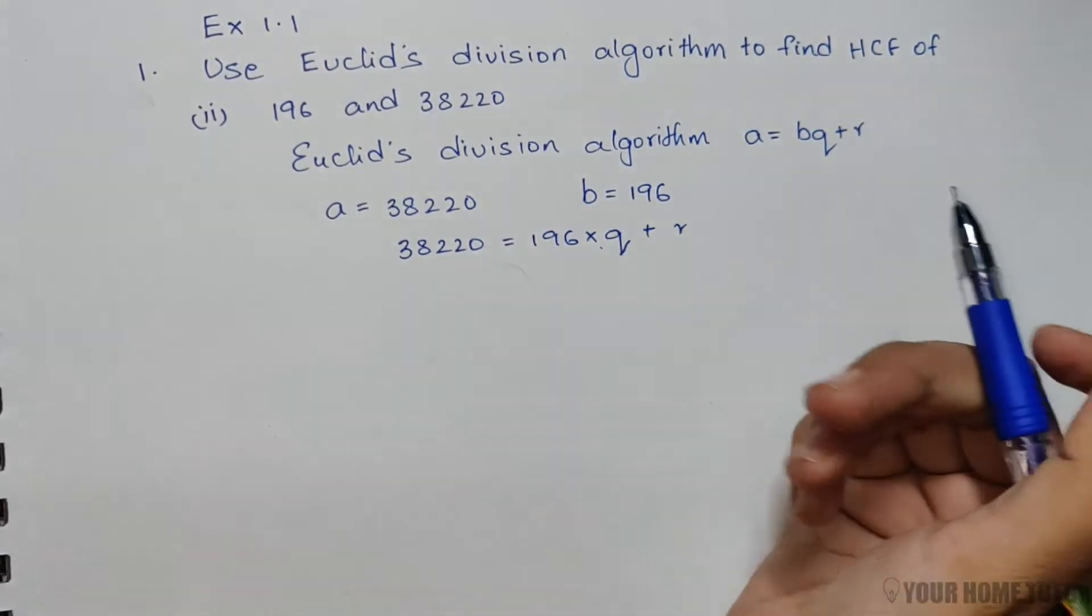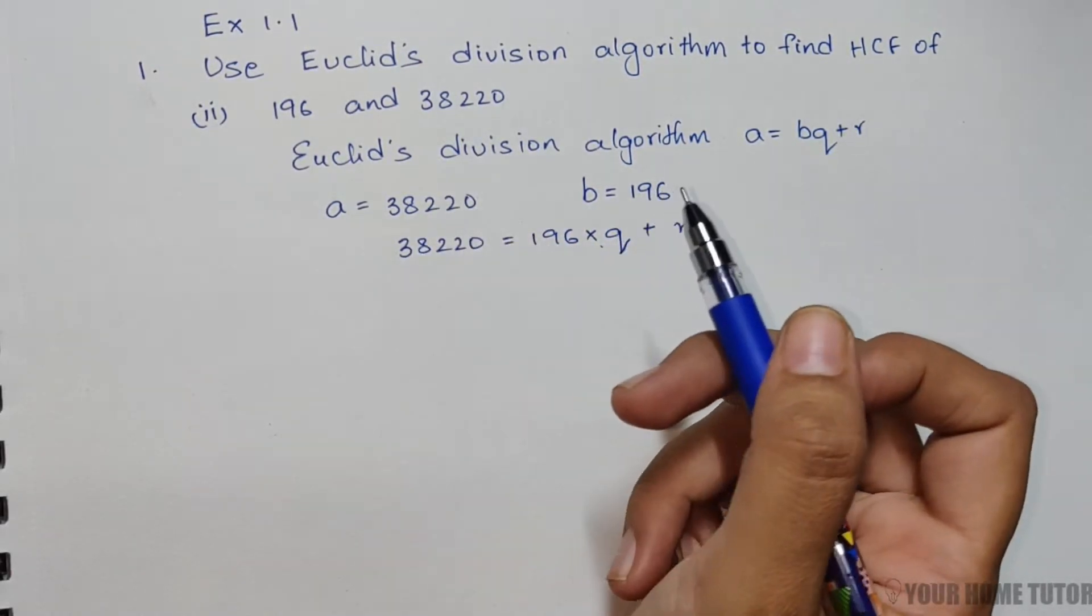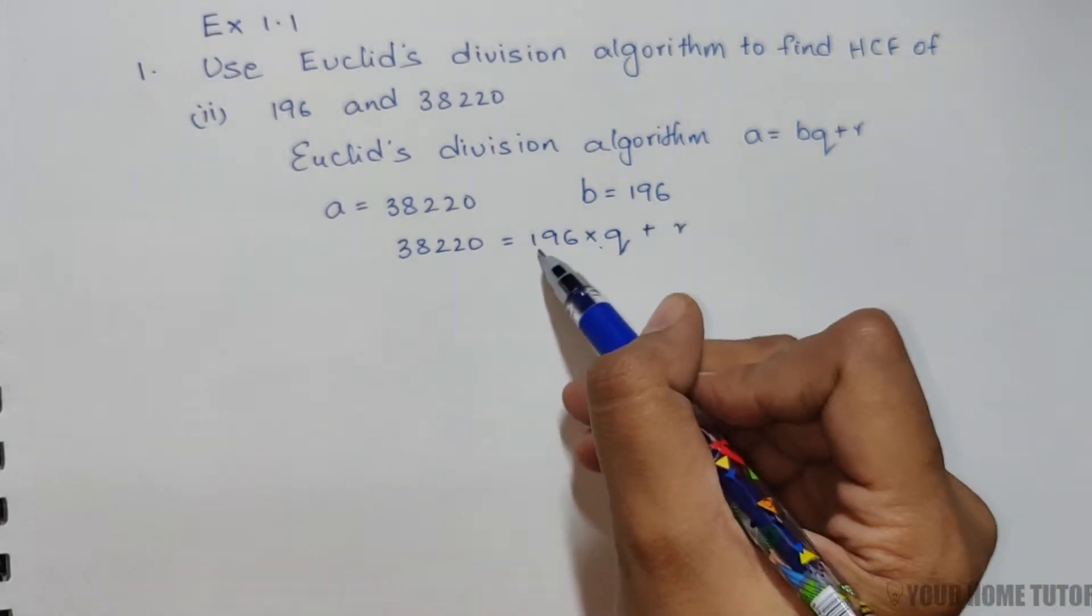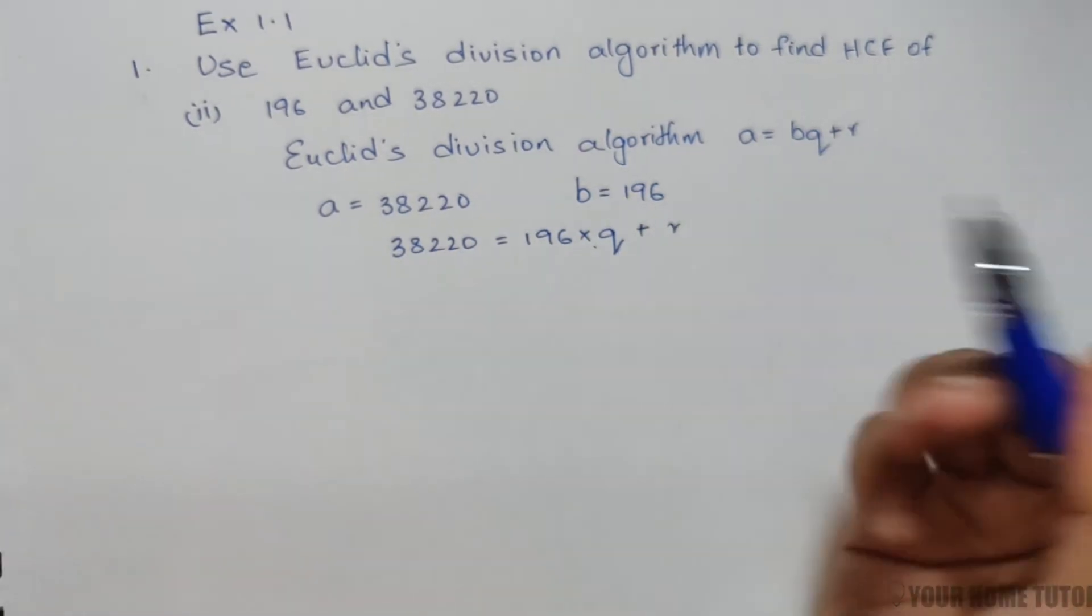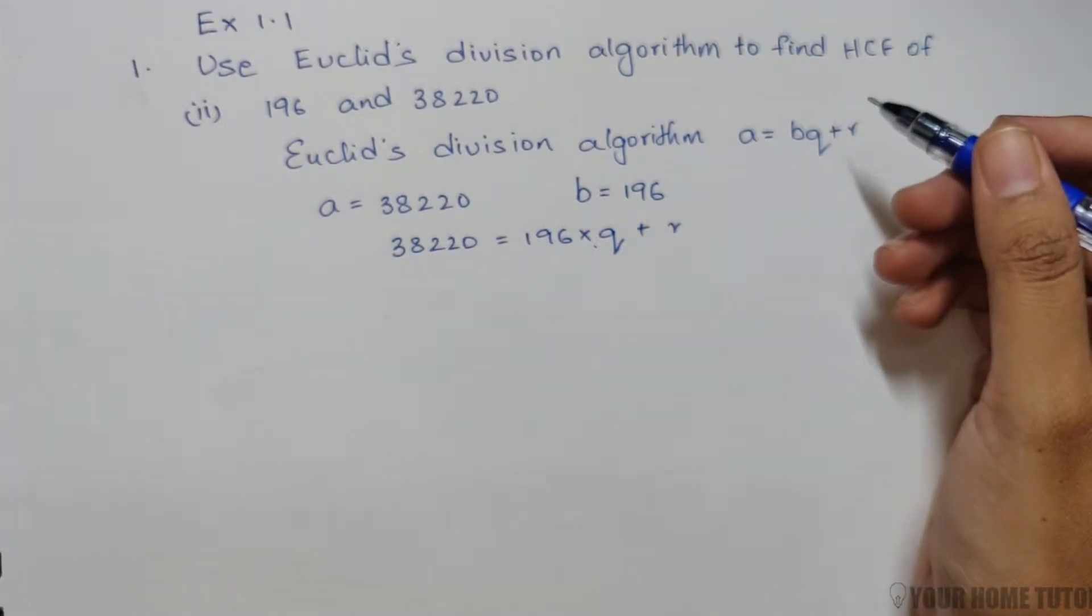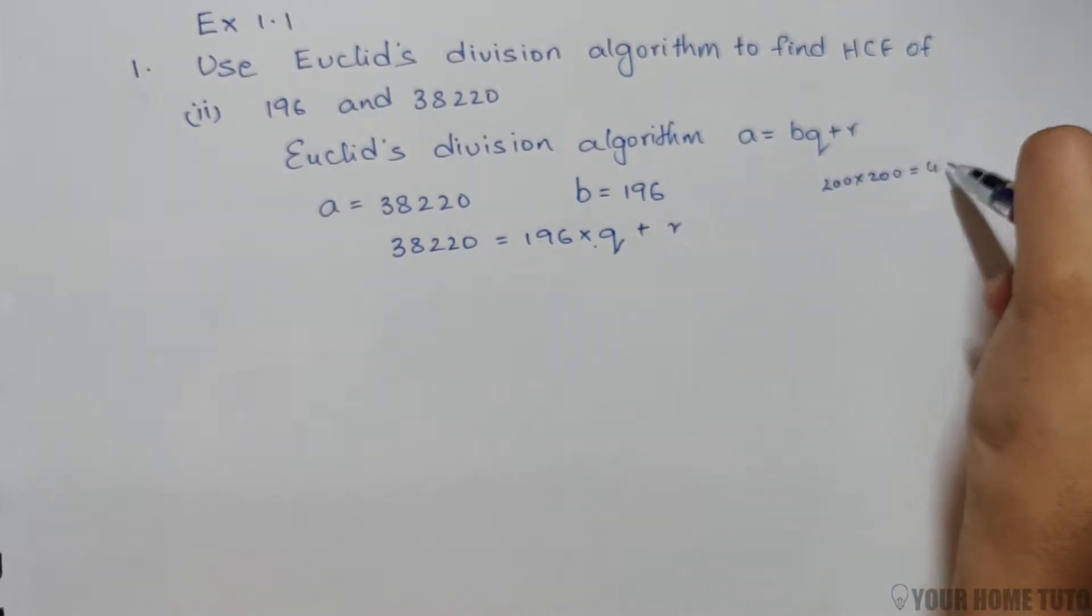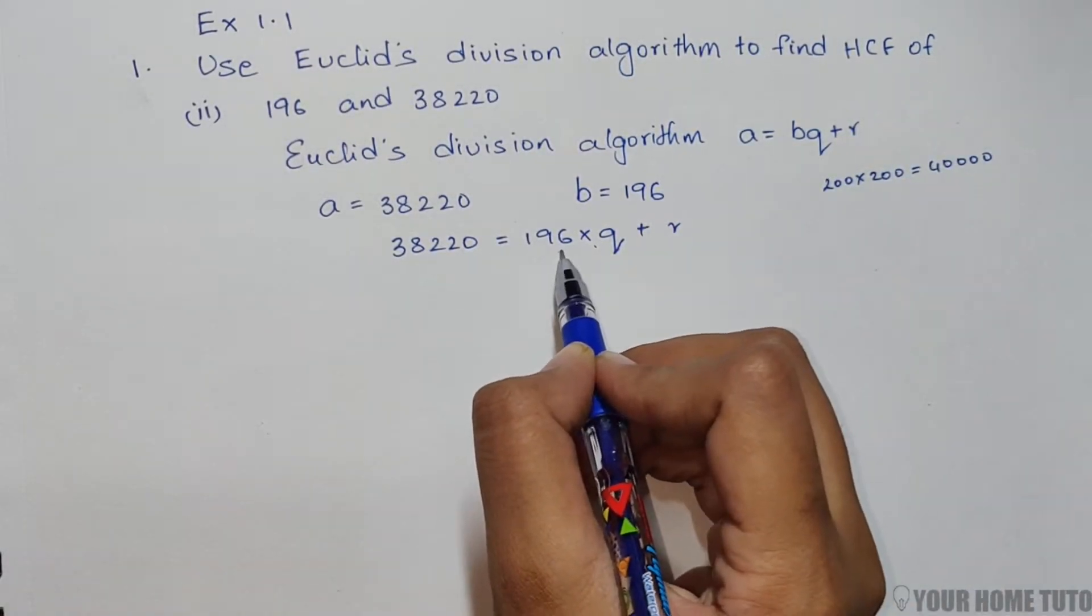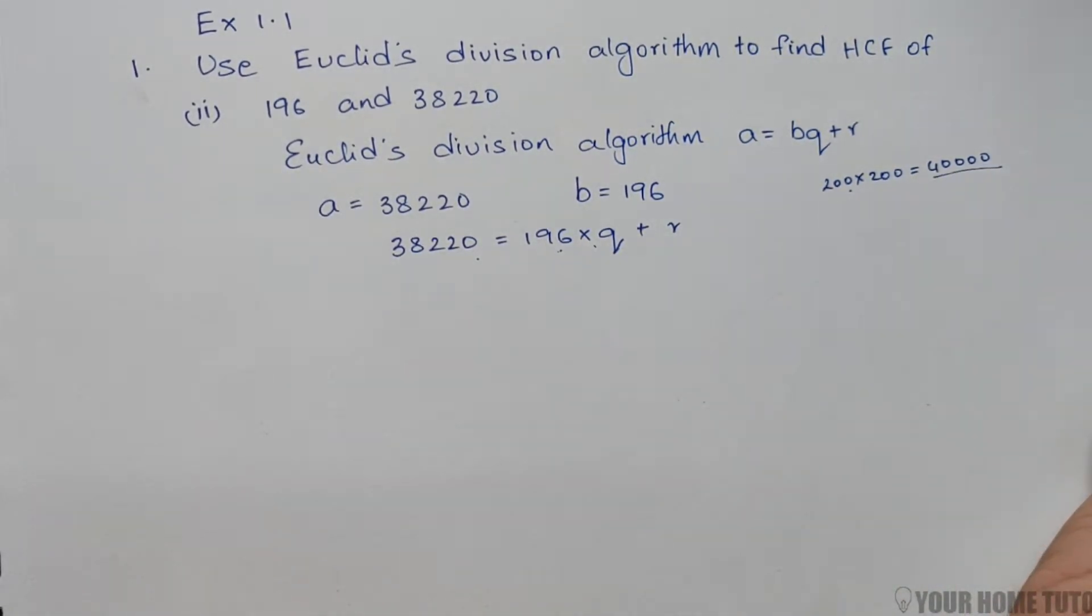To find the quotient, you can see that A has the last digit as 0. We can try to multiply a number so the last digit comes up as 0. For quick reference, 200 times 200 gives us 40,000. You can see 196 is almost close to 200, and 38,220 is close to 40,000.